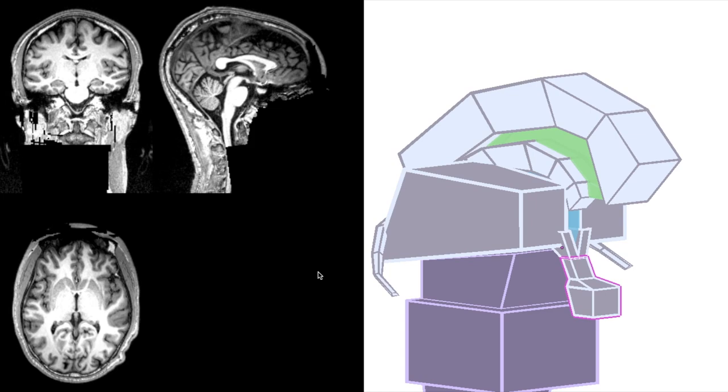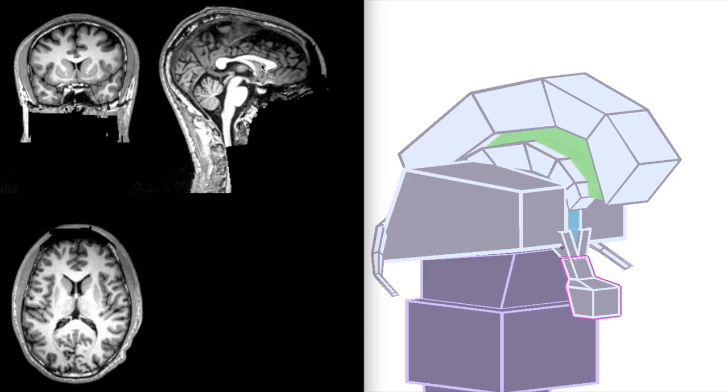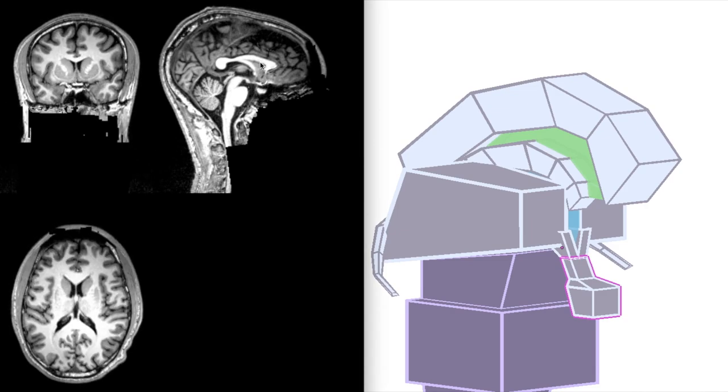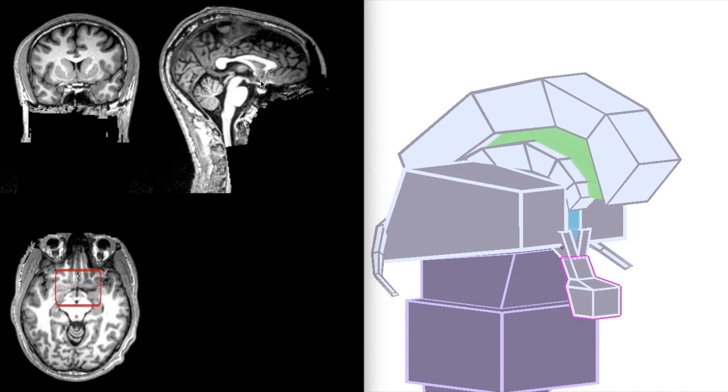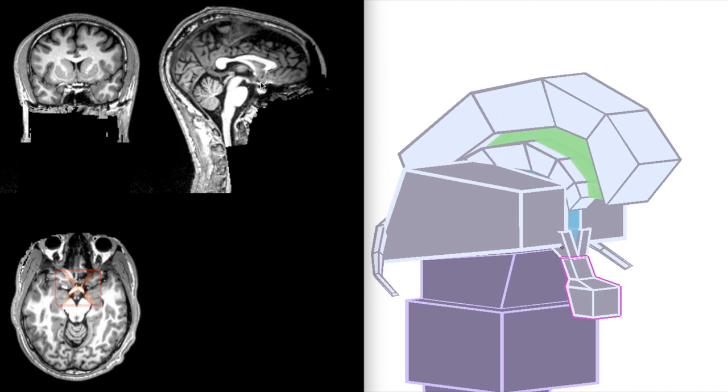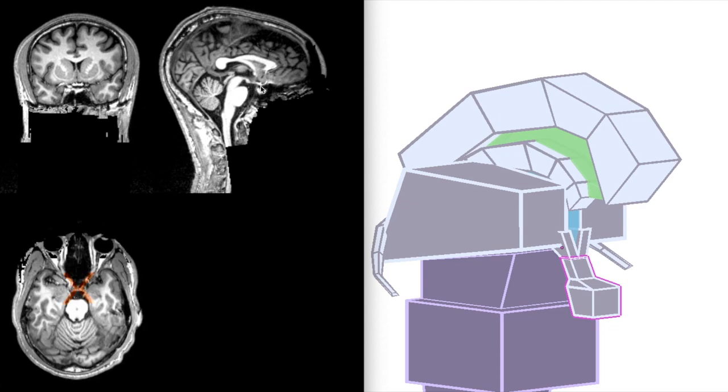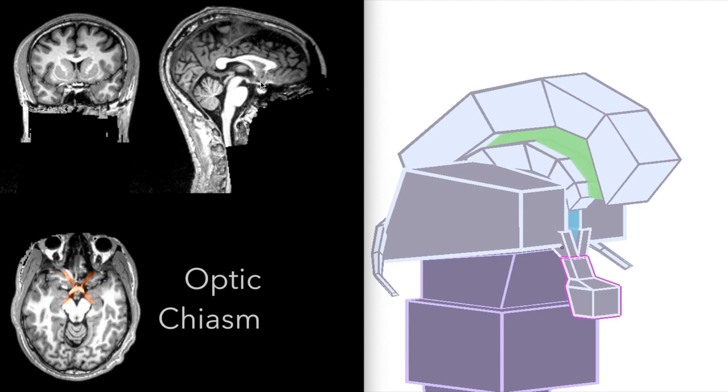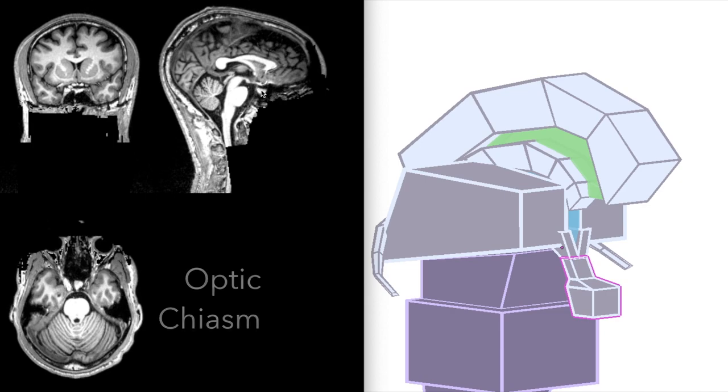The harder part is finding it on our MRI. So we'll find the pituitary gland first in the transverse plane, and then we'll work backward from that. Now, moving down through the transverse plane, can you see that X shape there? That is the optic chiasm. And sitting just beneath the optic chiasm is the pituitary gland.